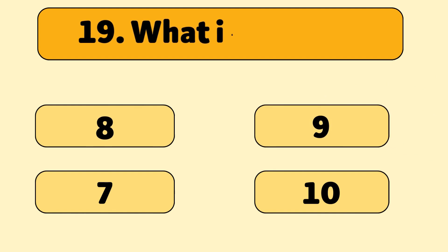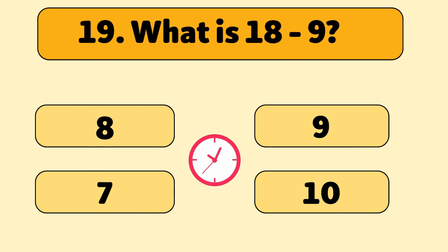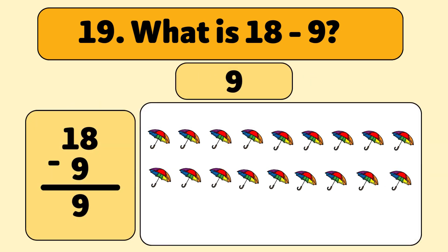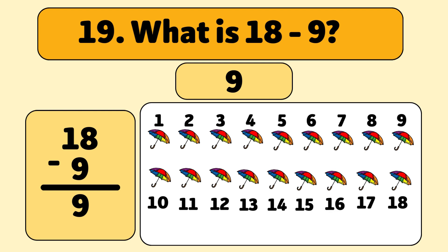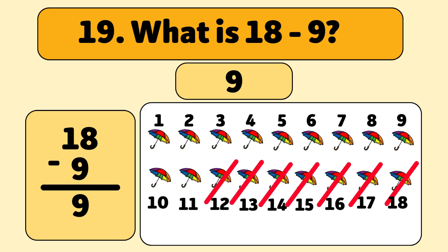What is 18 minus 9? The answer is 9. We start with 18 umbrellas and take away 9. Let's count: 1, 2, 3, 4, 5, 6, 7, 8, 9. We have 9 umbrellas left.